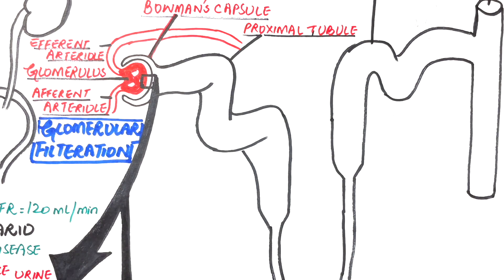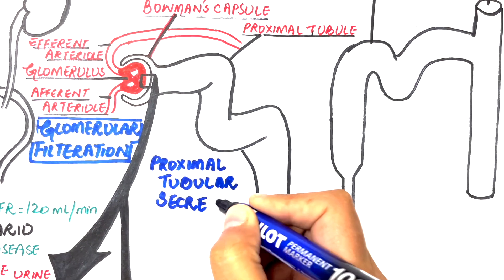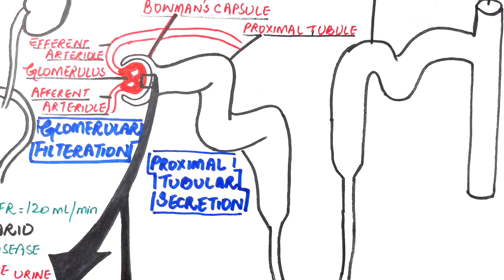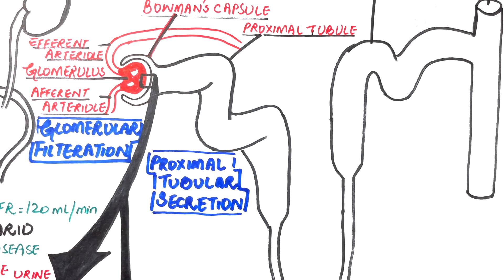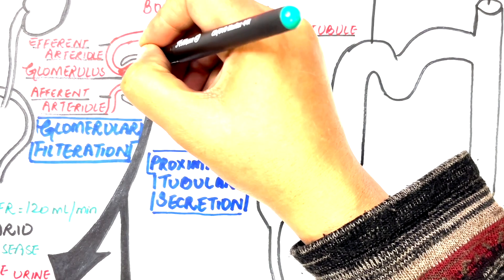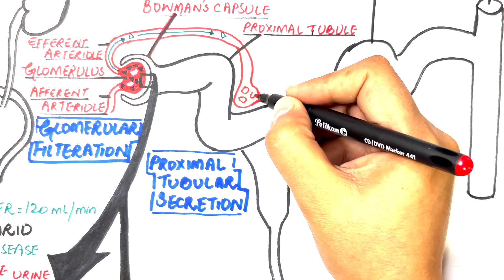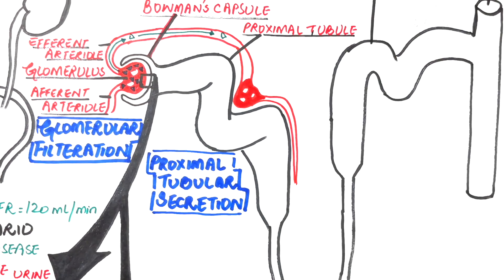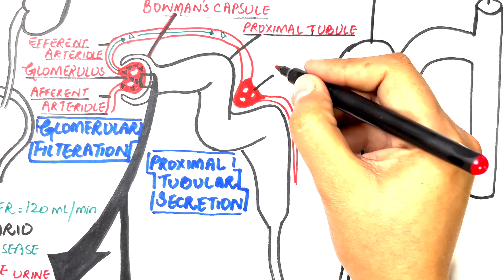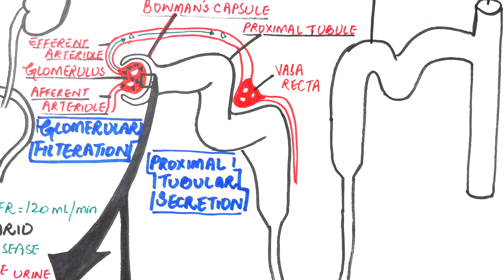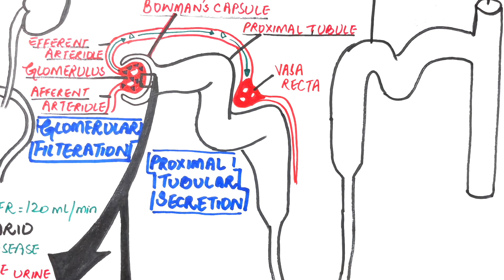In the next mechanism, which is proximal tubular secretion, if the drug has a high molecular weight, it cannot pass through the Bowman space. This causes the drug to leave the glomeruli through the efferent arteriole. The efferent arteriole forms a peritubular capillary network around the proximal tubule of a nephron, called the vasa recta, meaning the straight capillaries.